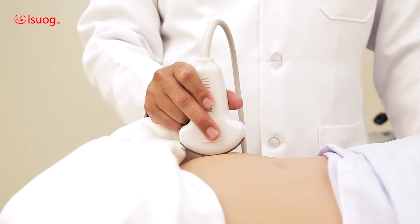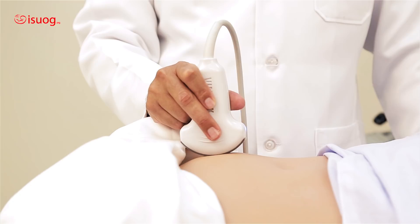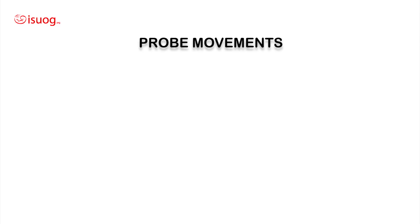It is crucial to hold your probe perpendicular to the maternal abdominal surface. This will ensure that you are examining the structure underneath the probe. I am going to demonstrate four important probe movements: sliding, rotating, dipping, and angling, as well as a combination of some of these movements.